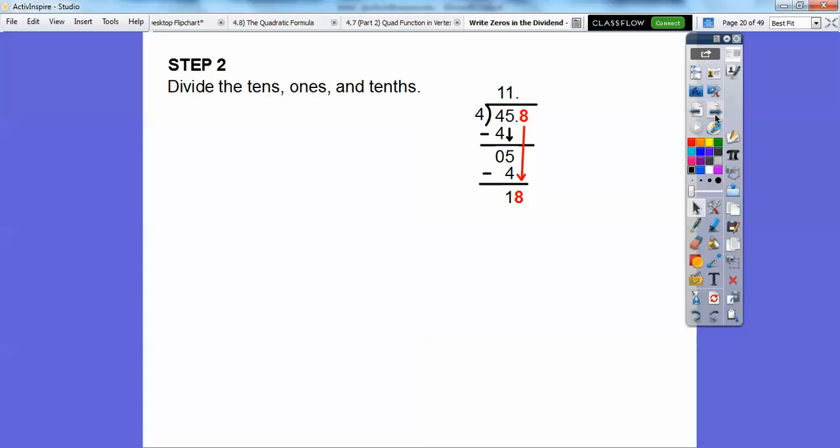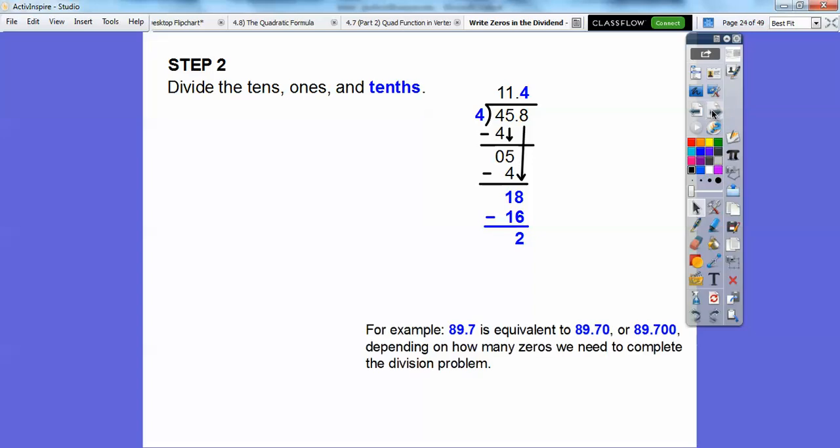Remember doing this? Four goes into eighteen. We're going to divide into the tenths. Four times four equals sixteen. We multiply four times four, then subtract, and we get two. Now there's no other digits. So we go back to what we said in the beginning of the lesson. 89.7 is equivalent to 89.70. So we're going to tag a zero right there. Write a zero in the dividend and just continue dividing. This is what your parents learned probably.